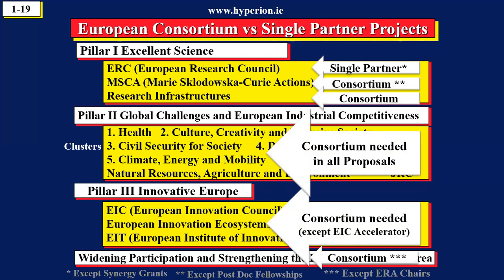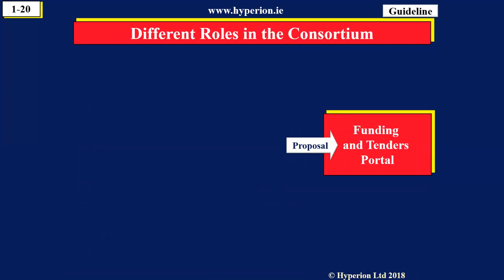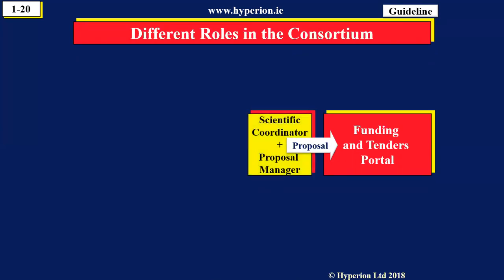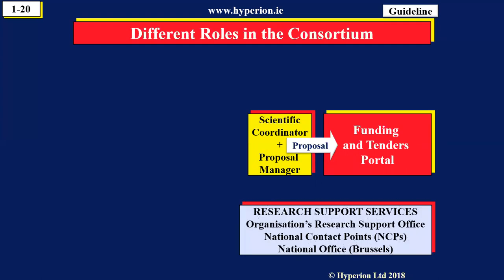So what do we mean by a consortium? When the proposal is submitted, it's submitted as an electronic document into the funding and tenders portal. If a consortium is made up of, say, 10 organizations, one of the organizations is designated as coordinator. I've coordinated 16 European projects and was coordinator of over 30 proposals. When you're compiling a proposal, the coordinator does anything up to 80% of the work, so I'm going to make sure I have somebody helping me — a proposal manager — and I'll use all the services available in the university and national contact points. The person who puts most work into compiling the proposal is the coordinator.